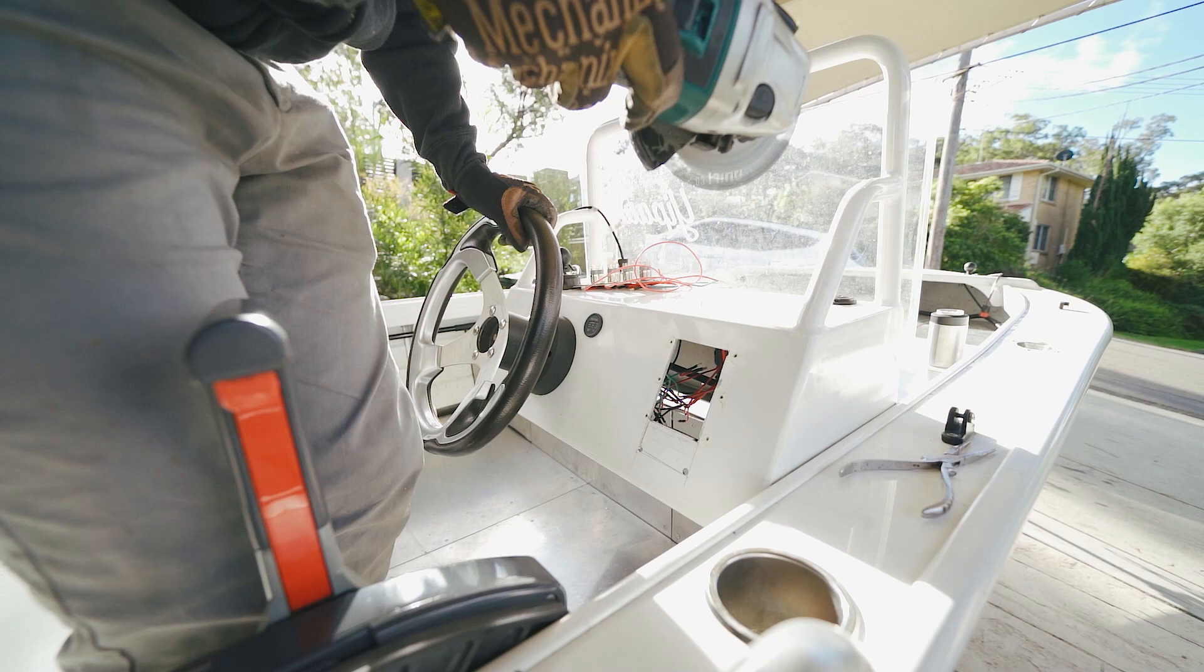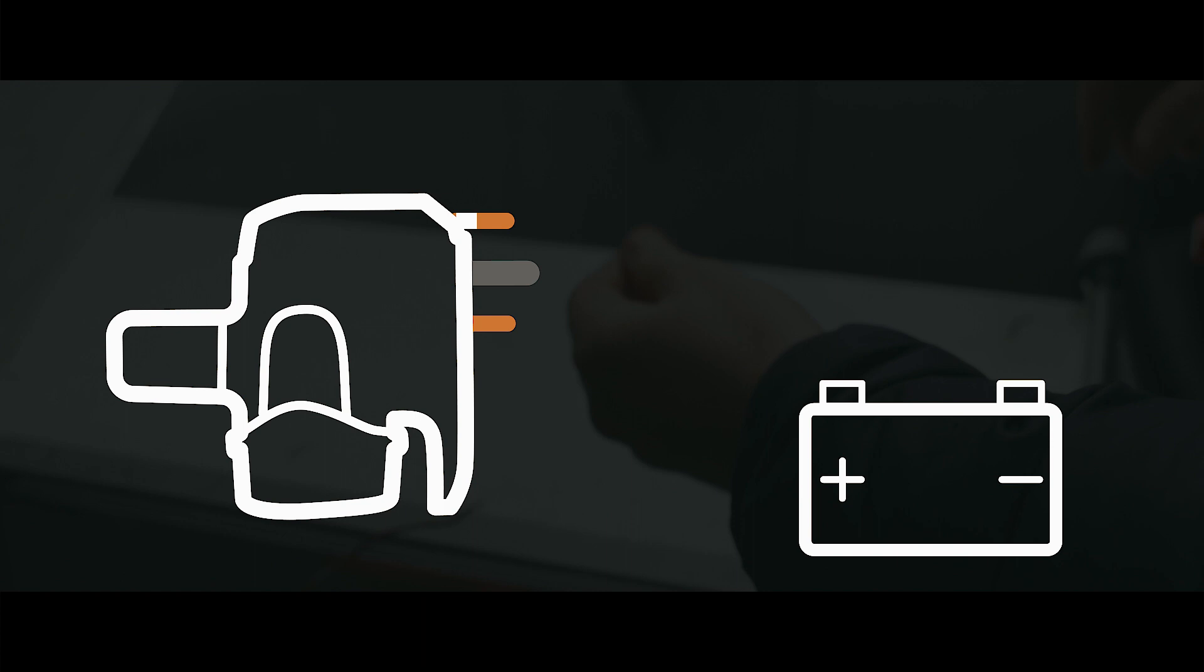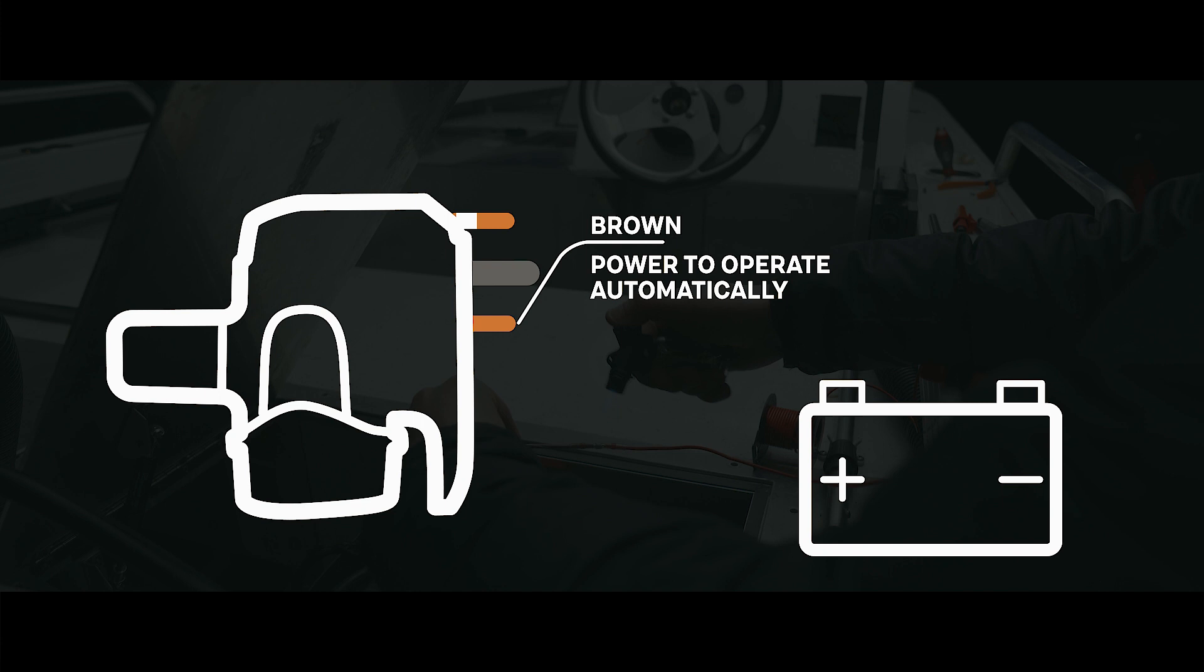Unlike the other pump, the automatic bilge has three wires coming out of it. A black wire, a brown wire and a brown wire with white stripes. As you've likely guessed, the black is for the ground. The brown wire provides power to automate the unit. And the brown with white stripes is to provide power to manually operate the pump.